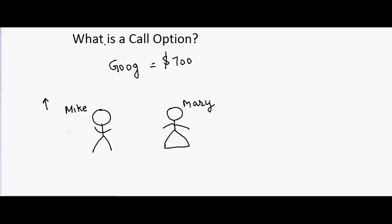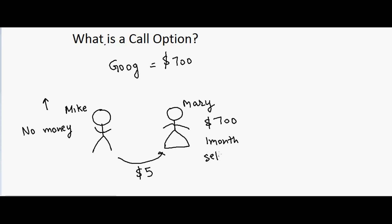Mike wants to purchase Google but is tight on money, while Mary already holds $700 worth of Google. So Mike can pay Mary five dollars, and in return Mary promises that in one month she will sell Google to Mike for $700. Mary benefits because she gets five dollars plus sells at $700, making $705 in total instead of just $700.